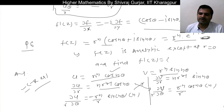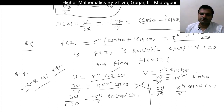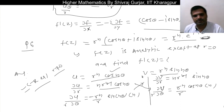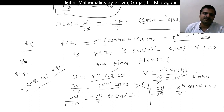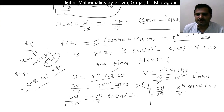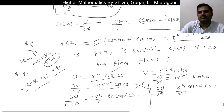This function satisfies the Cauchy-Riemann equations. Furthermore, u = r^n cos nθ and ν = r^n sin nθ are trigonometric and polynomial functions in r, and since r ≠ 0, the partial derivatives of u and ν exist and are continuous. Therefore f(z) is analytic everywhere except at r = 0.